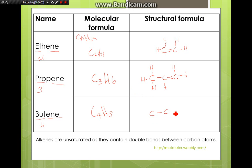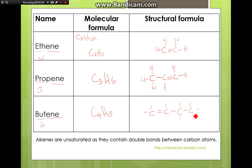For butene, we have four carbons. I can select any one pair to contain the double bond. Then we fill in the rest of the bonds. The first carbon has two bonds already, so two more for hydrogen. The second carbon has three bonds formed, so the final bond is for hydrogen. The third carbon has two bonds, so two more for hydrogen. The last carbon has used up only one bond so far, so it has three bonds for hydrogen. These are the first three members of alkenes, each containing one double bond.